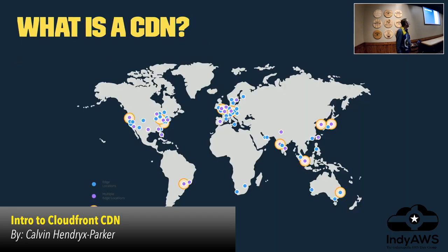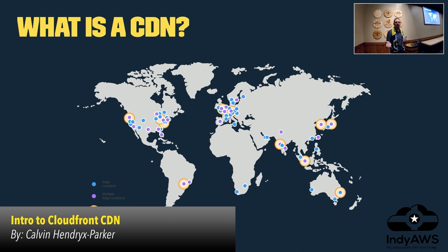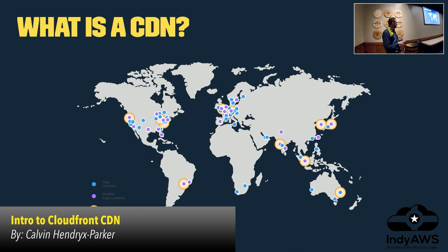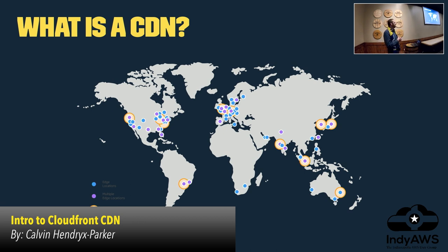The way we typically work around these problems is with a CDN. A content distribution network is a series of edge points on a network, typically called points of presence or POPs. Amazon has 144 different edge locations. The reasons to use a CDN include reducing latency, reducing bandwidth costs, improving page load times, and increasing global availability — if you have an outage in one region, your site can still be alive somewhere else.